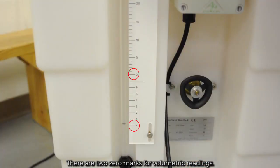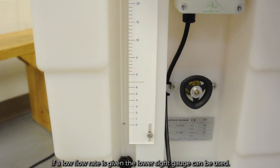There are two zero marks for volumetric readings. If a low flow rate is given, the lower sight gauge can be used. To know if it can be used, your time collection of volume must fall below six liters before the given time requirement.